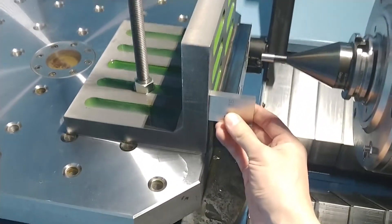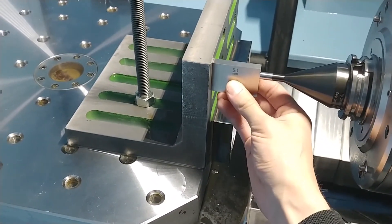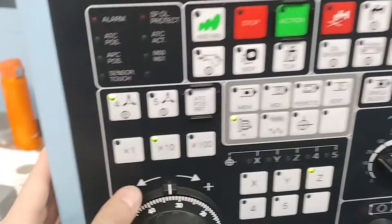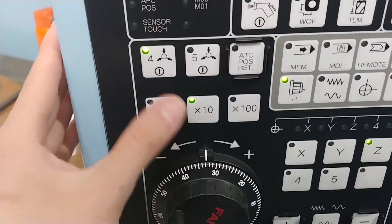Repeat this process until you find the first Z position where the block can slide between the tool and the table using the smallest handle jog increment on your machine.